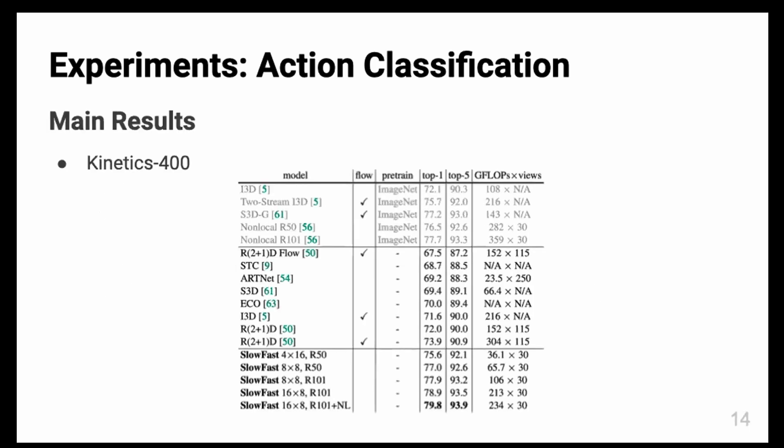The main results applied to the Kinetics-400 dataset is like this. The point here is that without pre-training on ImageNet, they can achieve state-of-the-art performance with the SlowFast system.